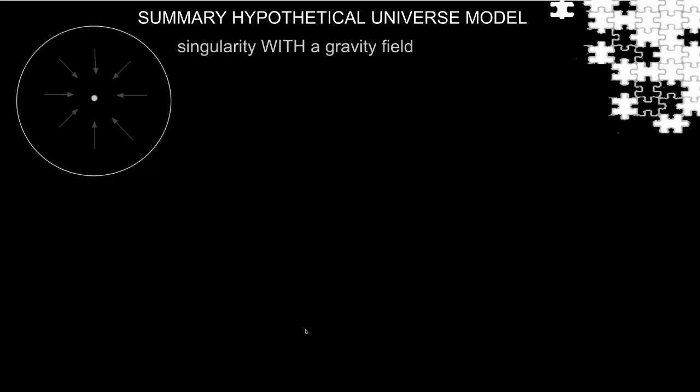This universe model evolves in three stages. The edge of the universe is represented by a circle. Before time, t is zero. The universe was a singularity with an empty universe-sized gravity field around it.